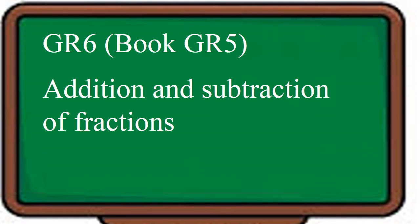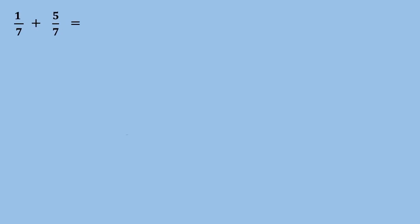Good day everyone. Today we're going to start a new lesson concerning the addition and subtraction of fractions. This lesson is for grade 6, book of grade 5, so please stay focused and let's begin. We have to add these two fractions: 1 over 7 plus 5 over 7. First of all, we have to look at the denominator — as long as the two denominators are equal, we can start the operation immediately.